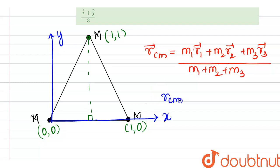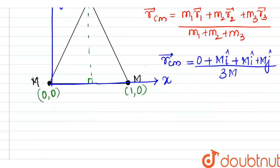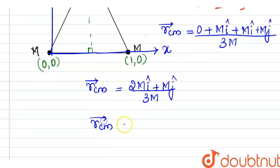Let's substitute. R_cm equals M1 times R1 which is 0, plus M2·R2 which is M times î, plus M3·R3 which equals M·î plus M·ĵ — all divided by M1 plus M2 plus M3 which is 3M. So M·î plus M·î plus M·j gives 2M·î plus M·ĵ divided by 3M. On eliminating M, R_cm equals (2î + ĵ)/3.